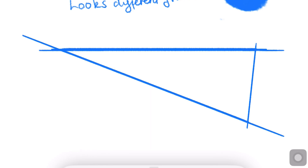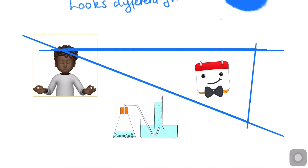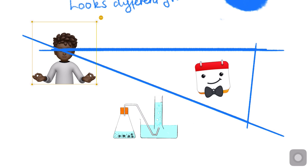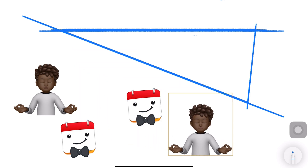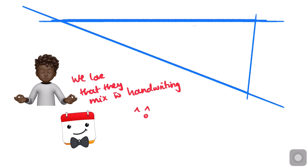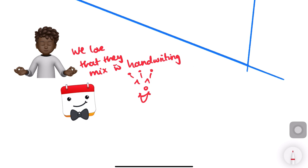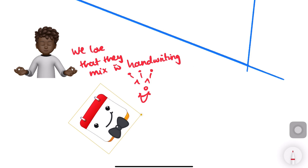We can also add stickers to our notes now. They go behind our handwriting and have basic features to let you duplicate. We love that they mix with handwriting. You can also rotate and resize the stickers, which is awesome.